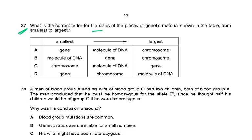Question 37: What is the correct order for the sizes of pieces of genetic material shown in the table from smallest to the largest? Gene, molecule of DNA, chromosome. If you look at it, this is a chromosome and the gene is a portion of DNA which codes for a characteristic. The molecule of DNA is the whole DNA which is inside the chromosome. The answer is A - gene is the smallest, molecule of DNA is bigger, and then the chromosomes have all the proteins on which the DNA is bound. Question 37 is A.